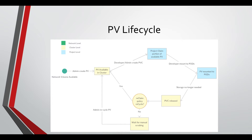So this is the lifecycle of the persistent volume. You start by having the network volume available in your network, accessible by masters and nodes. Then the administrator creates a persistent volume object in the cluster, booking a portion of this network volume. In the project, the developer or admin creates a persistent volume claim which books a specific portion of this persistent volume to the project.